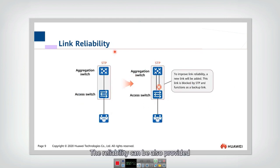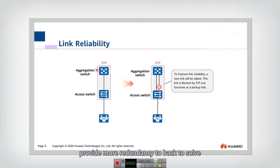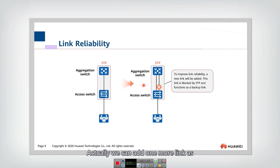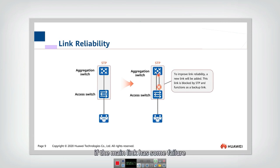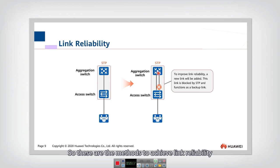Reliability can also be provided at the link level. Originally there is only one link connected between the access switch and aggregation switch. To provide more redundancy and enhance link reliability, we can add one more link as a backup link. This backup link is blocked by STP when the main link works well. However, if the main link has a failure, the backup link automatically becomes active, the connection is maintained, and link reliability is achieved.